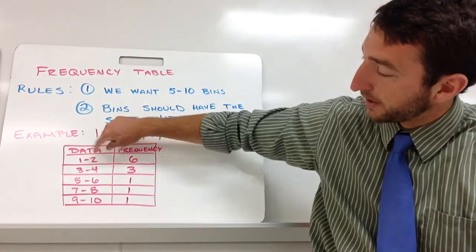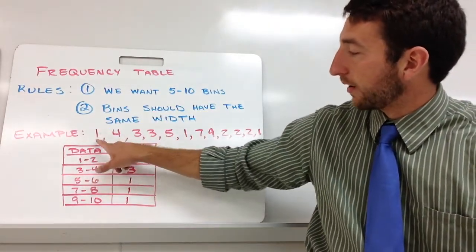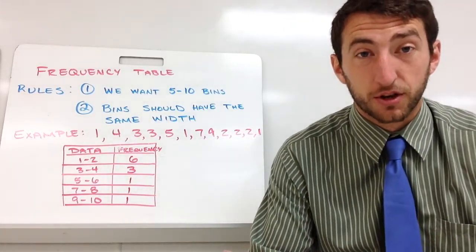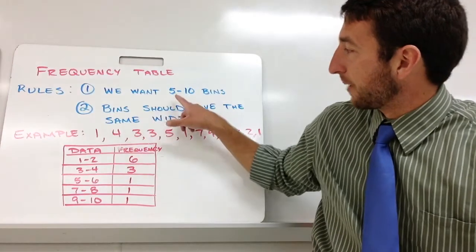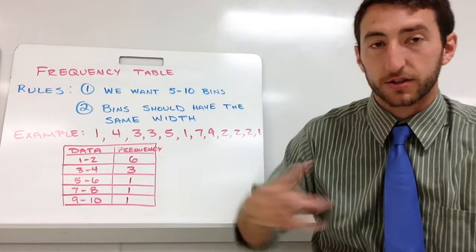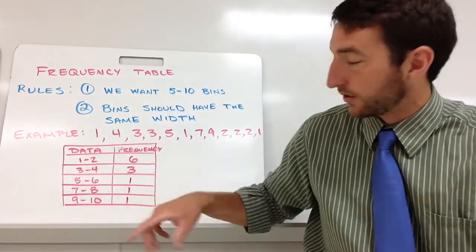So if you notice, I made my bins a width of two, and we've got numbers from one to nine. So I know that I have ten numbers to go through. And so if I want to get my five bins, I'm going to take my ten, which is my range, divided by five, which makes two. So then I get my width of my bin as two.